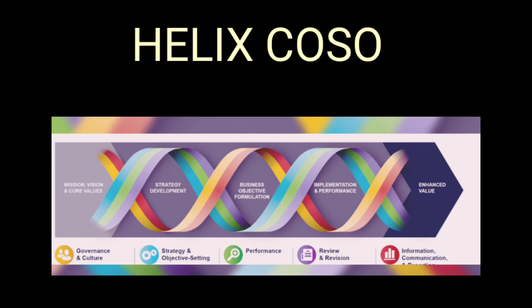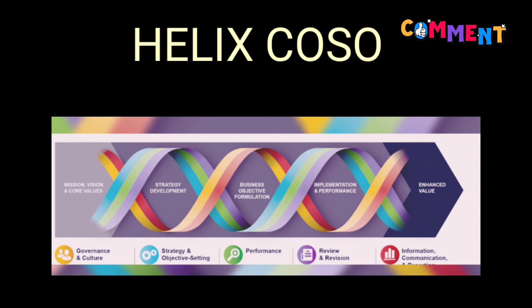This helix-shaped graphic for the COSO ERM framework represents how a risk management principle is integrated through an organization's lifecycle. The helix is based on five components, each supported by multiple principles. The five components are: 1. Governance and Culture, which establishes oversight for Enterprise Risk Management (ERM). 2. Strategy and Objective Setting, which from a strategic planning perspective shows what controls need to be implemented.